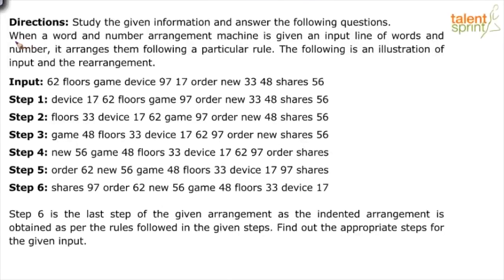The directions are: when a word and number arrangement machine is given an input line of words and numbers, it arranges them following a particular rule. The following is an illustration of the input and the rearrangement. The input is '62 floors game device 97 17 order new 33 48 shares 56' — a combination of six words: floors, game, device, order, new, shares, and six numbers.